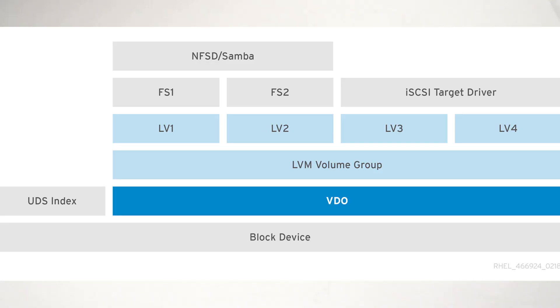All you really need to get started with VDO is a block device and then deciding how much logical space you want to give it with your VDO tools. VDO volumes can be used underneath local file systems, iSCSI LUNs, or even Ceph. You just want to be careful where the VDO volume lives. It's even possible to use it with LVM, but you're most likely going to want to use the VDO volume to create the physical volume itself. The image on screen should really help explain this.